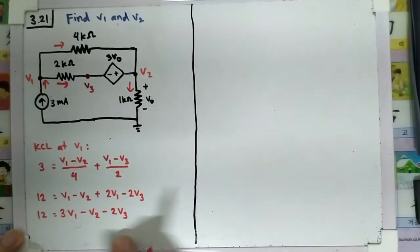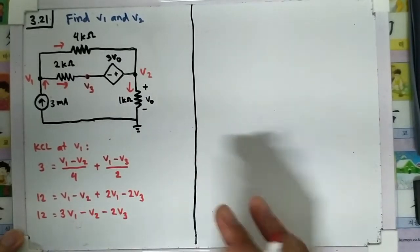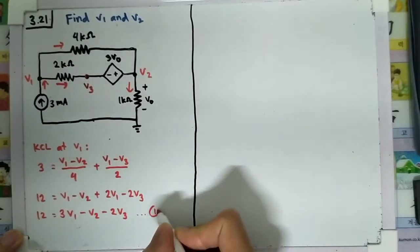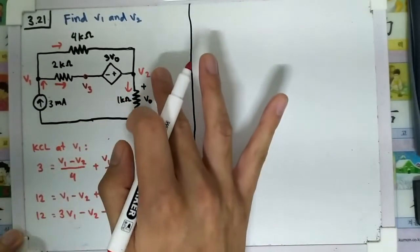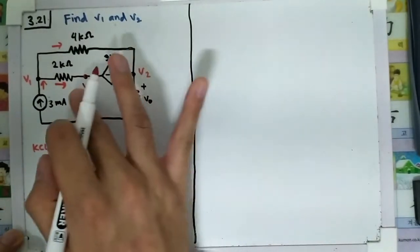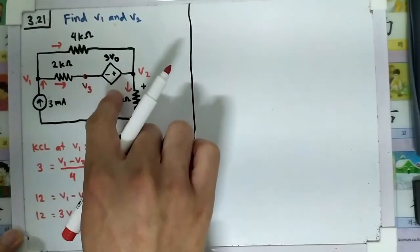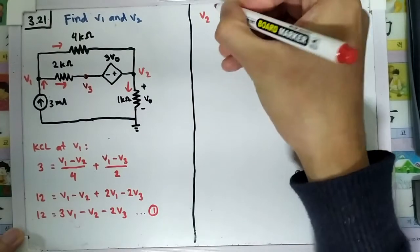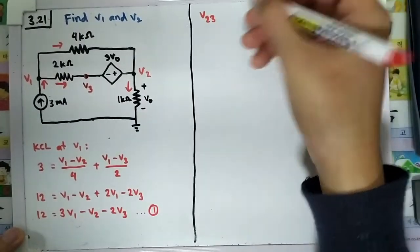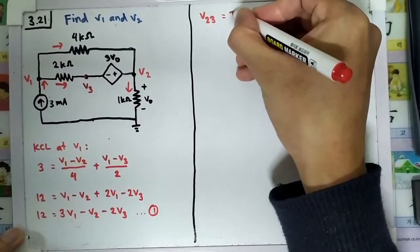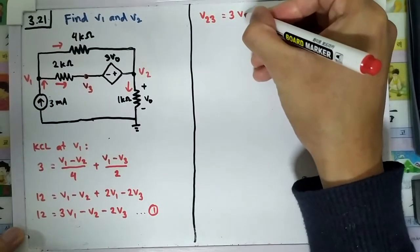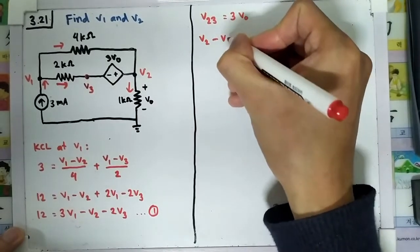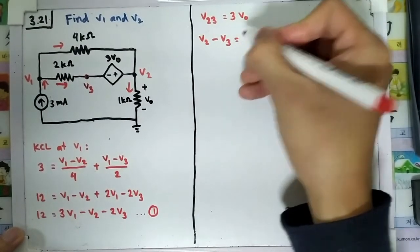We need to eliminate v3. Let's save this as Equation 1 for now. Looking at v2 and v3, there is a dependent voltage source between them, so the value between v2 and v3 is equal to 3v0. So v2 minus v3 is equal to 3v0.